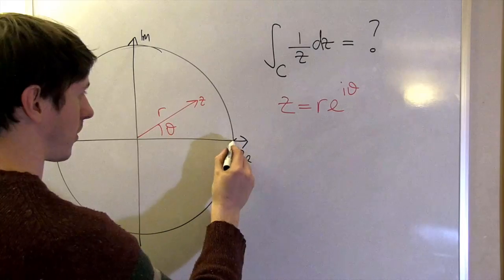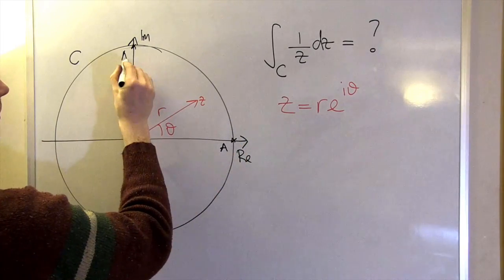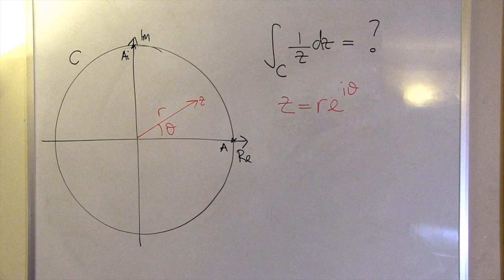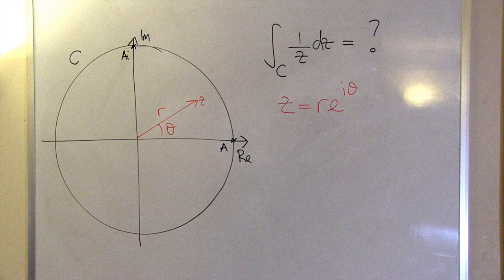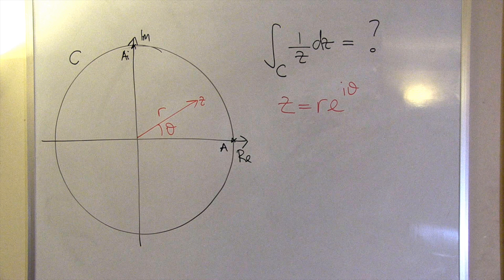The contour intersects the positive real axis at a and the positive imaginary axis at a times i. At the point a, one over z is just one over a, and at the point a times i, one over z is just one over a times i.